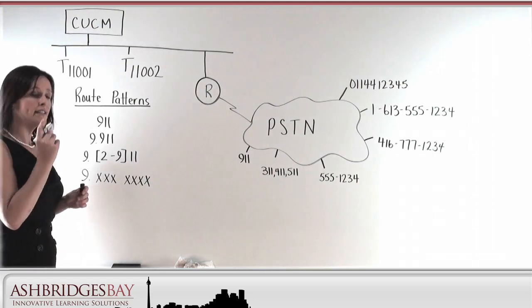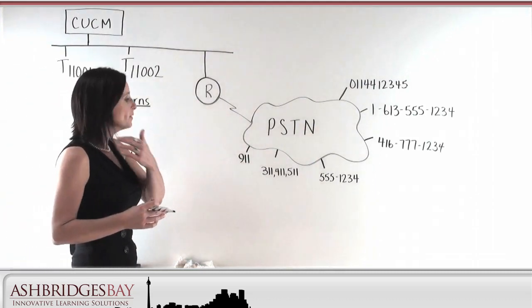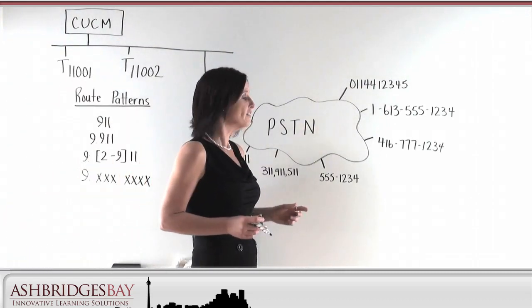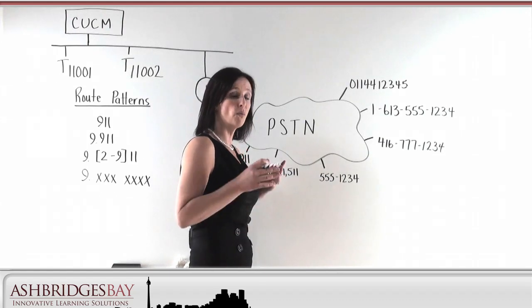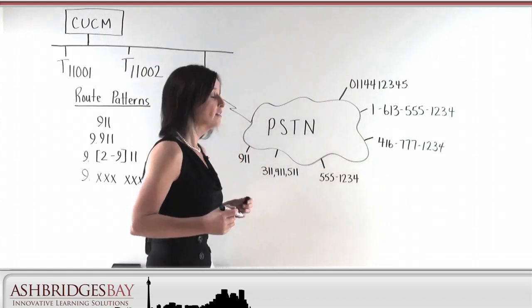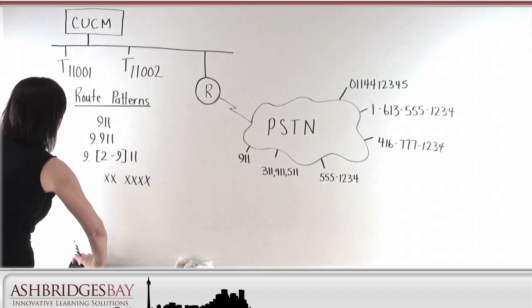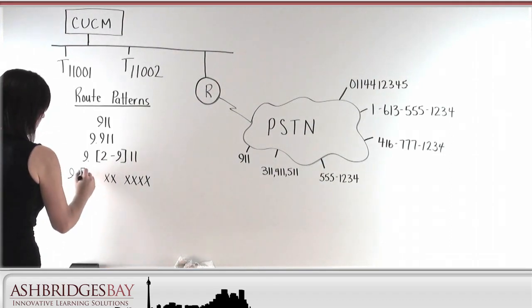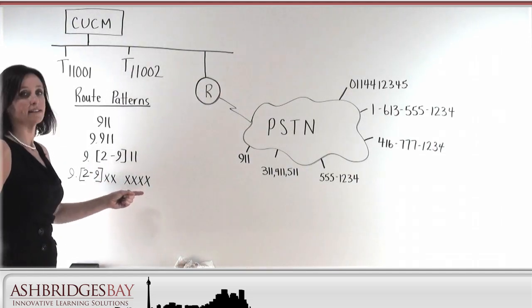So let's think about it. Do we have any numbers in the North American numbering plan that start with a zero or a one? Do you ever dial a friend at 0551234 or 1551234? No, you don't. So we can change the first X and put in our wildcard. There's no zero, there's no one. So now I have 2 to 9 X X X X X X X.